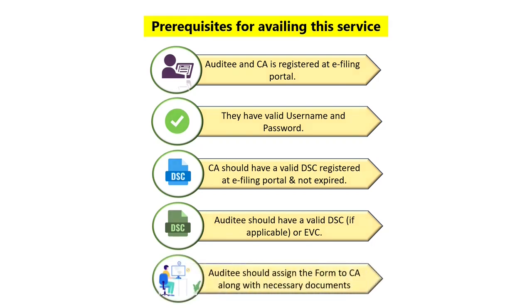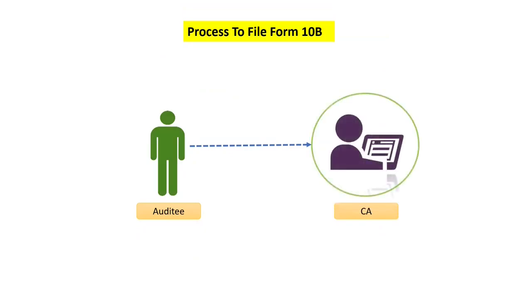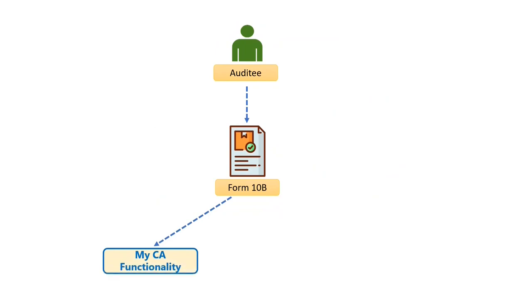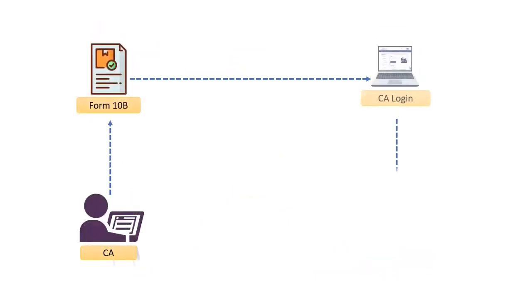The auditee should assign the form to the Chartered Accountant along with the necessary documents. The process for filing Form 10B is: first, the auditee is required to add a Chartered Accountant on the e-filing portal; after adding the CA, the auditee assigns Form 10B either through the 'My CA' functionality or through the 'File Forms' functionality.